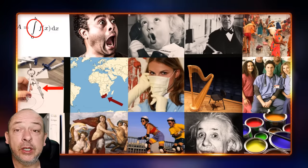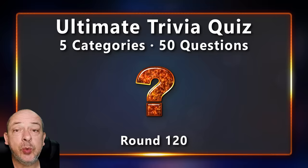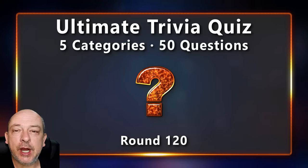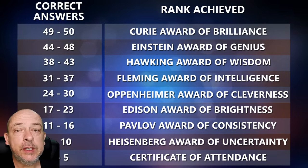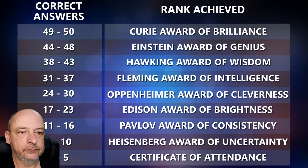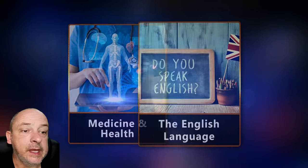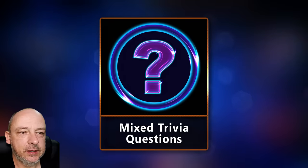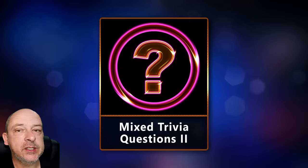Hello clever people, welcome back to Detormentes. My name is Sean, this is round 120 of the ultimate trivia quiz. 50 questions as always — keep track of how many questions you can answer correctly and check the end of the video to see which rank you manage to get. The topics for today's quiz are medicine and health, the English language, mixed trivia questions, picture trivia, and another round of mixed trivia questions. Let's begin.